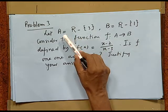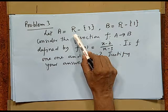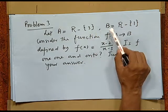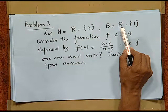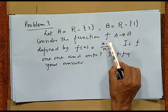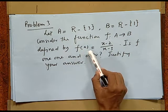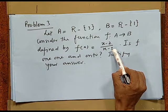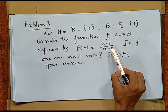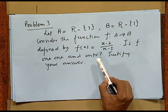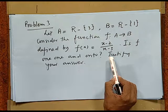Let us take one more problem. Here, we are given two sets A and B. A contains all the real numbers except 3. B contains all the real numbers except 1. We have a function from A to B defined by f(x) = (x - 2)/(x - 3). The question is whether f is one-one and onto, and we have to justify our answer.